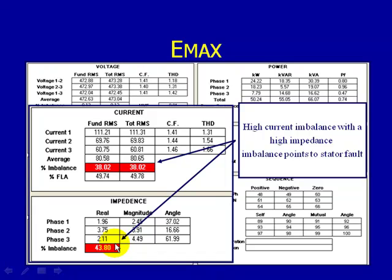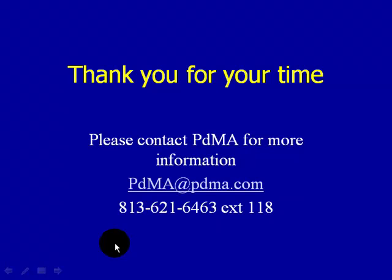The goal, once you've found these issues, is that you'll need to get the motor repaired or replaced. But the real goal is to prevent these conditions from occurring by utilizing the six fault zone approach — to catch the problem before it becomes catastrophic. Thank you for your time. For more information, please contact PDMA Corporation at pdma@pdma.com or call 813-621-6463 extension 118. Thank you and have a great day.